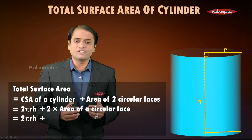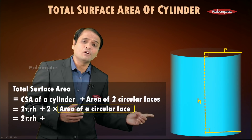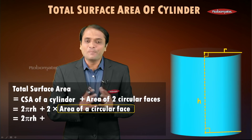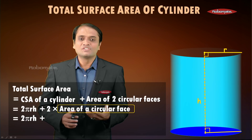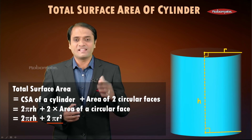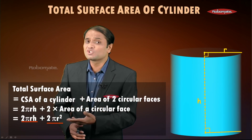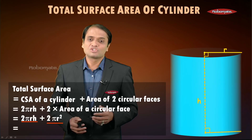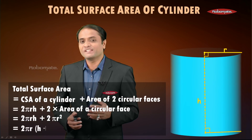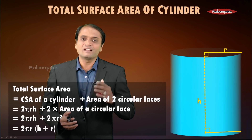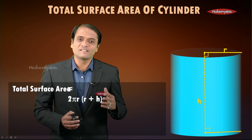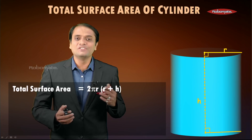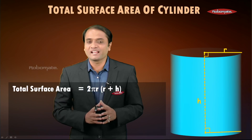So the total surface area equals 2πrh plus 2 × πr². This gives 2πrh + 2πr². Taking 2πr common from both terms, we get 2πr(h + r), which is written as 2πr(r + h). This is the final formula for the total surface area of a cylinder.